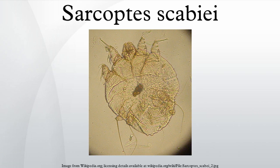Sarcoptes is a genus of skin parasites and part of the larger family of mites collectively known as scab mites. They are also related to the scab mites Notoedres, also a mite that infests the skin of domestic animals. Sarcoptic mange affects domestic animals, and similar infestations in domestic fowls cause the disease known as scaly leg.